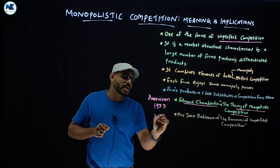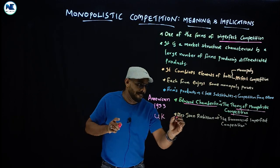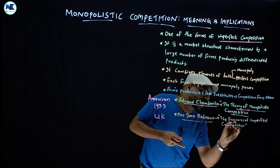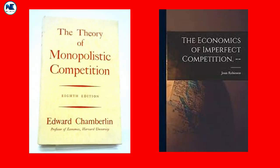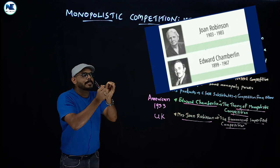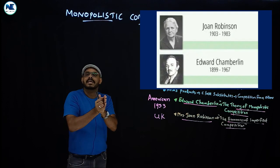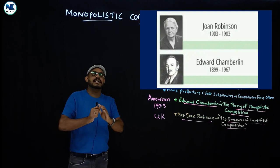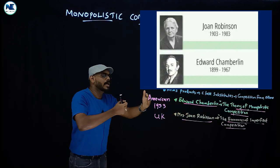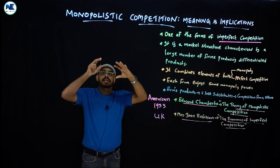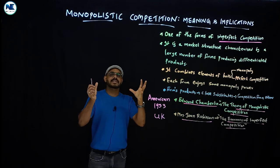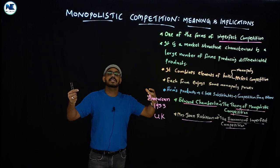The British economist Mrs. Joan Robinson — a lady — wrote her book 'The Economics of Imperfect Competition,' also published in 1933. American economist Edward Chamberlin and British economist Mrs. Joan Robinson independently developed their theories, and Robinson's book made revolutionary changes in price theory.